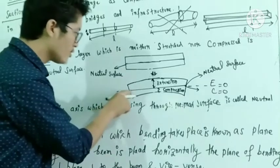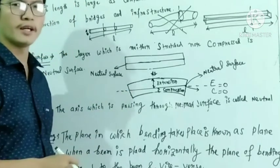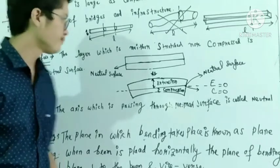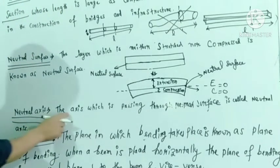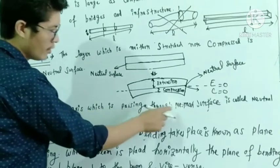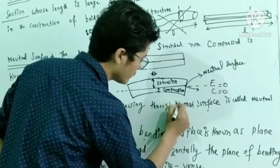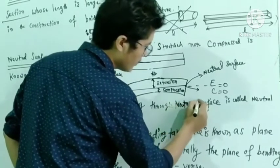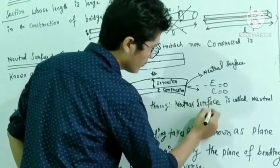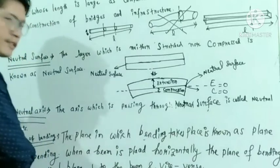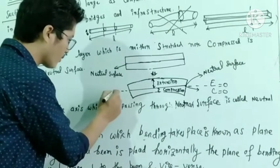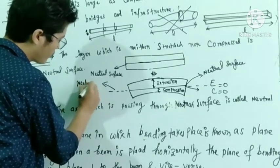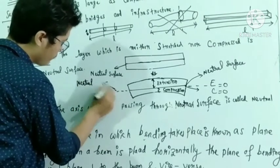The axis of the neutral surface is called the neutral axis. The axis which is passing through the neutral surface is called the neutral axis.